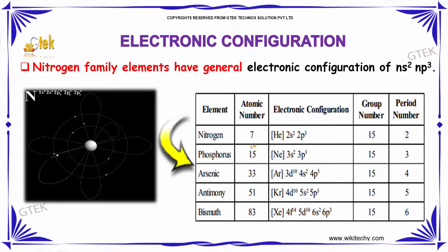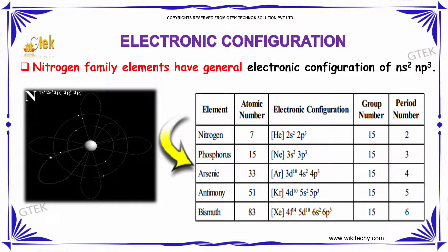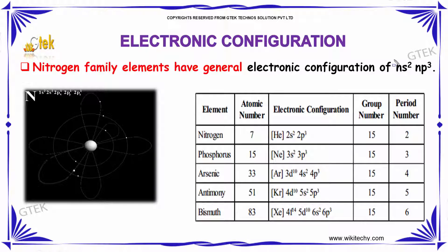The natural abundance of arsenic, antimony, and bismuth in the Earth's crust is relatively low. Here in the nitrogen family table, you can see nitrogen, phosphorus, arsenic, antimony, and bismuth with their atomic number, electronic configuration, group number, and period number. The standard electronic configuration pattern for the nitrogen family is ns² np³.